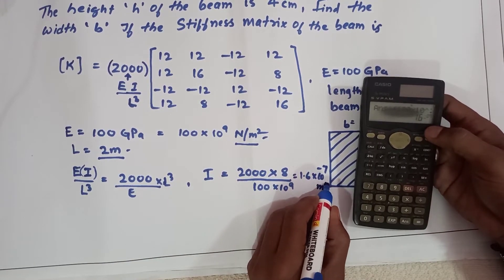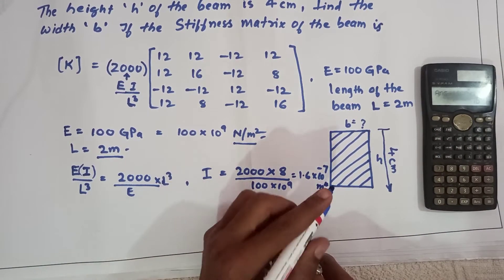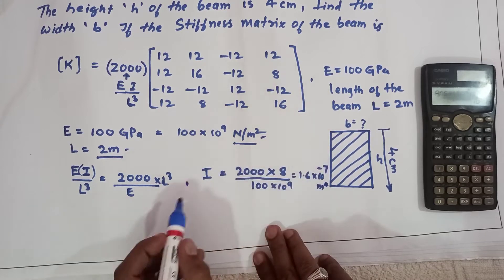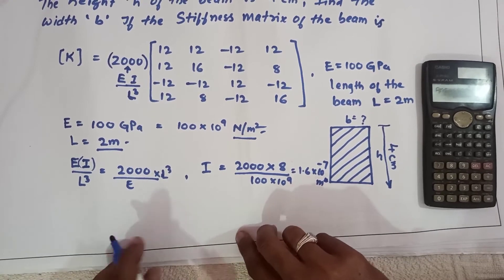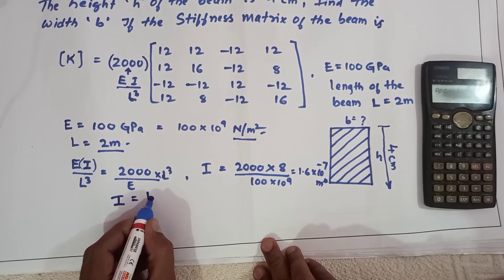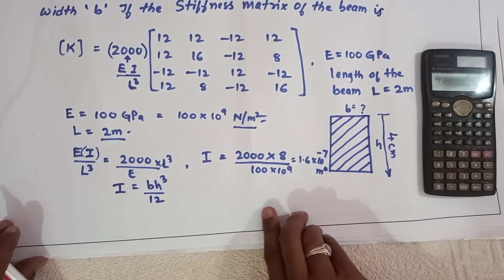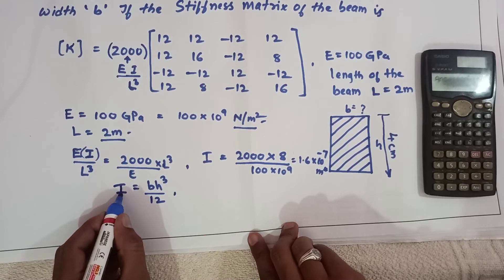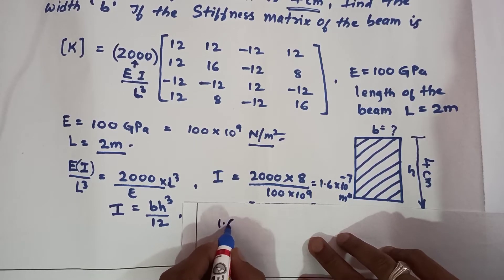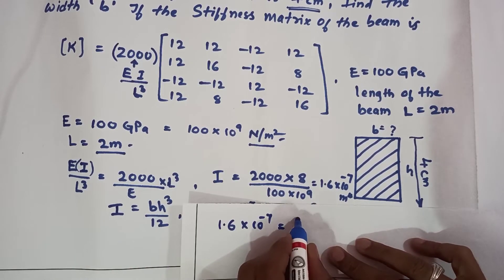The unit of moment of inertia is meter to the power of 4. Now, for a rectangular cross-section, the moment of inertia formula is I = BH³/12, where B is the width and H is the height. We have just calculated I = 1.6 × 10⁻⁷ m⁴, and B is the width we need to find.